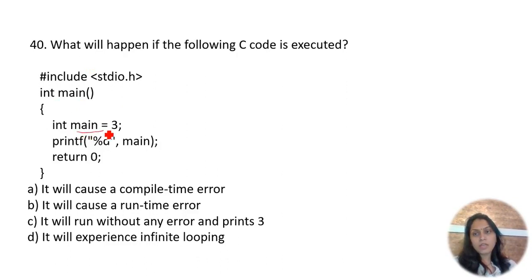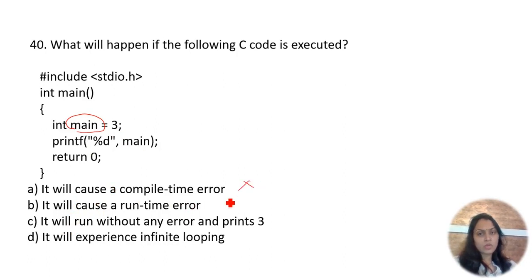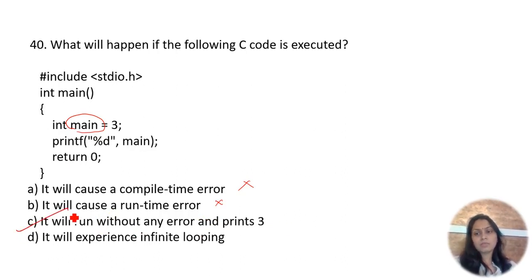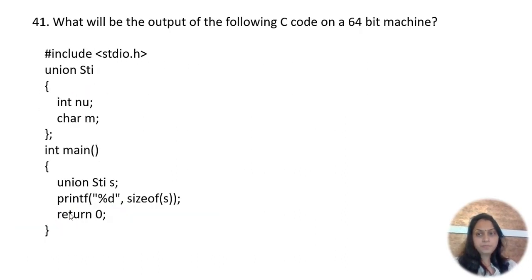What will happen if the following C code is executed, where main is used as a variable name with int main = 3 and printf(main)? The program will run without any error and print 3. Option C is the correct one.